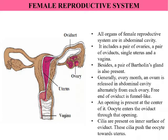Every girl child is born with about 2 to 4 million oocytes in the ovaries, but they are immature. Only at the age of puberty, which is about 10 to 17 years in girls, do these oocytes get matured, and one ovum or oocyte from either of the two ovaries is released.